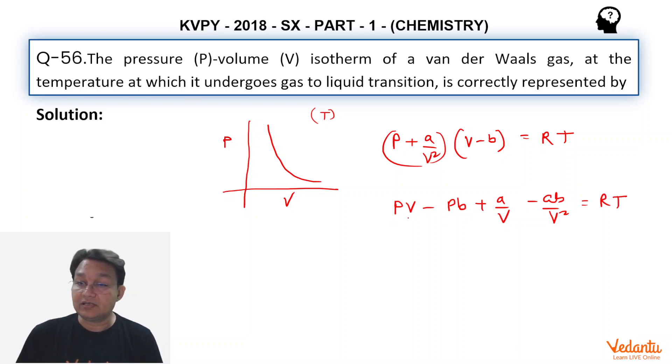And if we simplify it in terms of volume, let's multiply it throughout by V² and divide it by P. So if we multiply this by V²/P throughout we are going to get this equation V³...